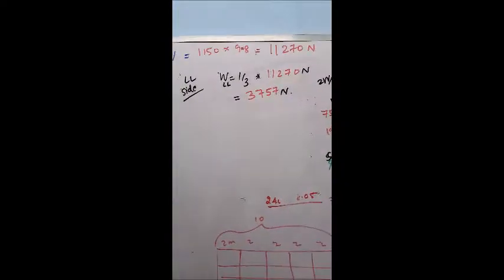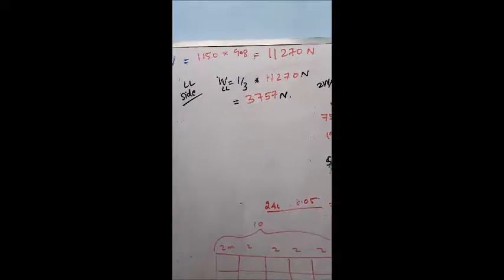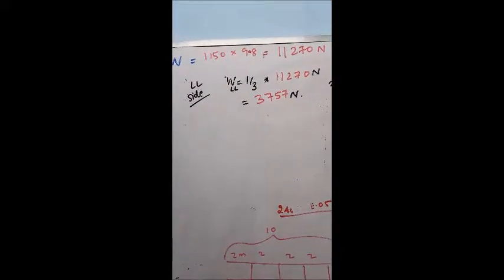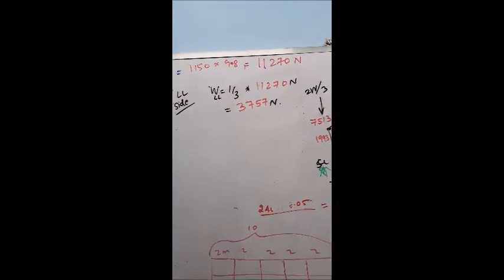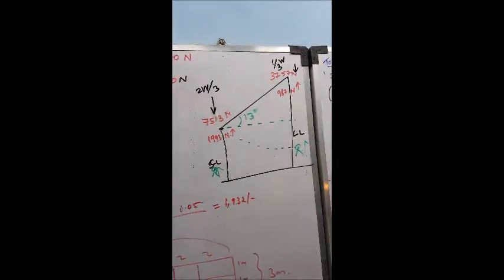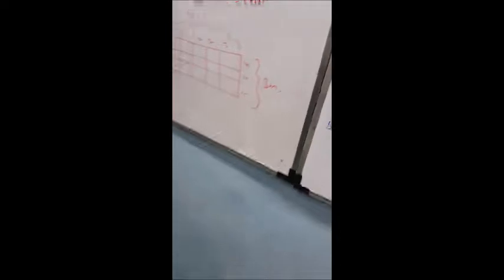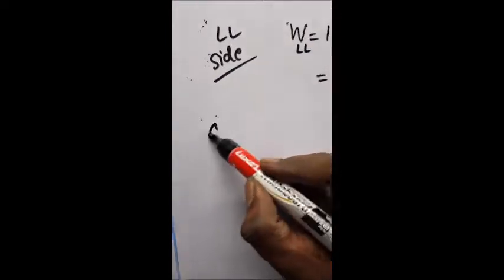Sorry, those were the wrong numbers. I had to turn over there. So basically, you can see that the weight on the long leg side is one-third, so 3757 Newtons, and the short side has a weight of being two-thirds of the same.